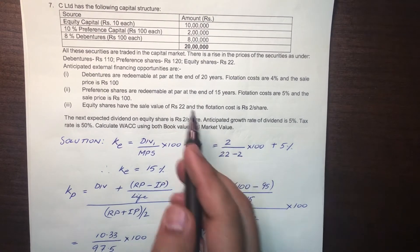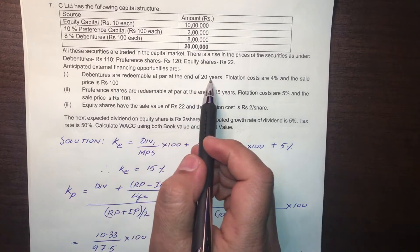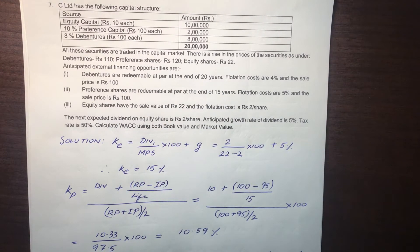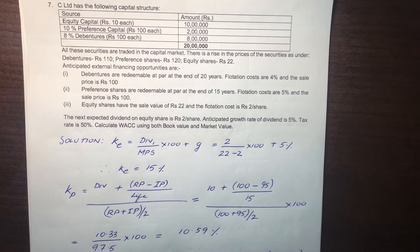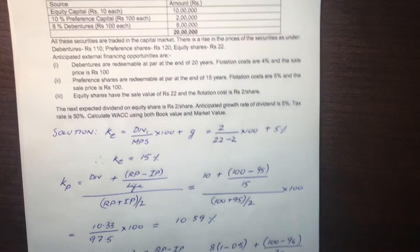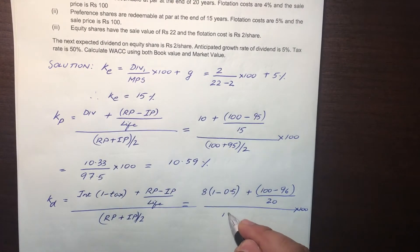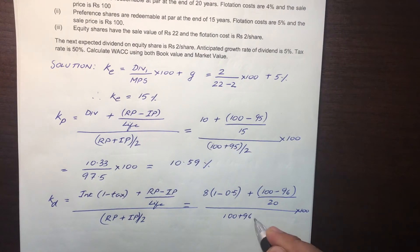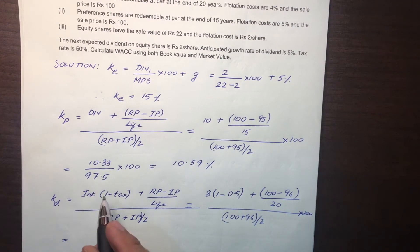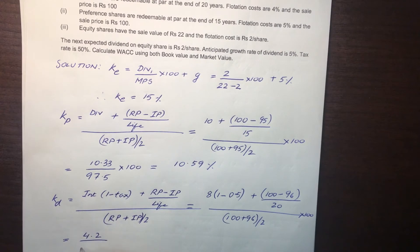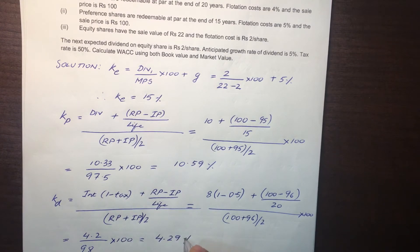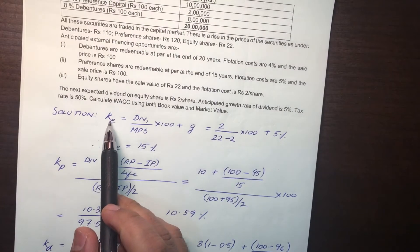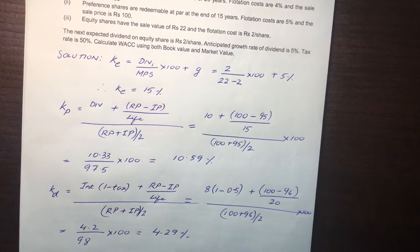Denominator = (100 + 96) / 2 = 98. So KD = 4.2 / 98 × 100 = 4.29%. We have found out KE, KP, and KD. Now let us compute the WACC using book value weights first.